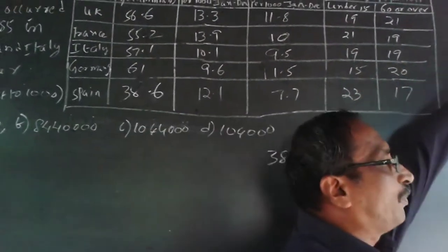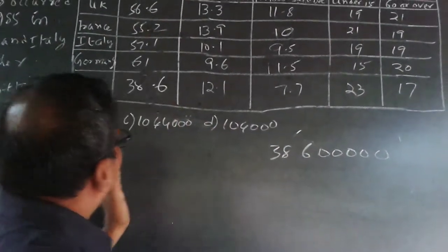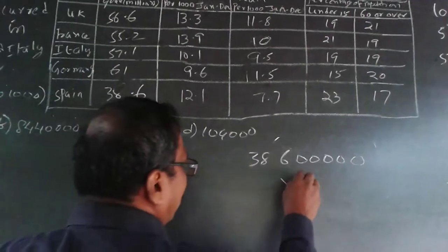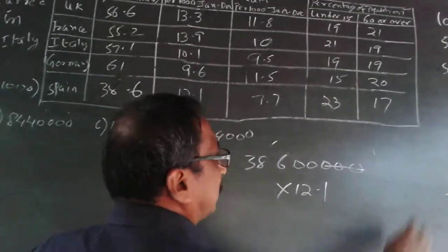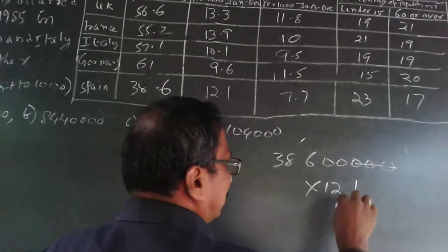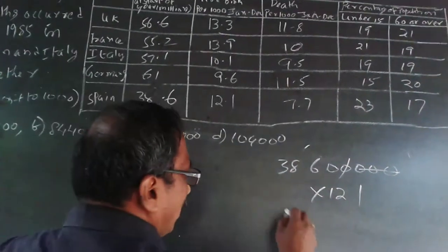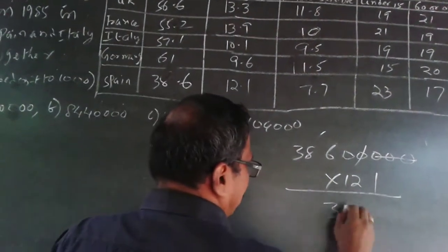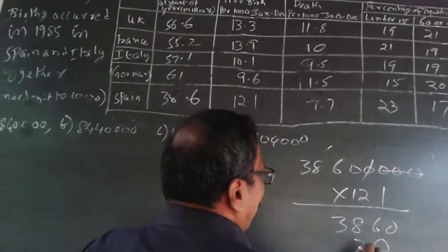This divided by thousand, it is × 12.1 ÷ 1000. I am removing these three zeros as I did there. Similarly, for this decimal I am moving one zero, so it will be 3860 × 121.